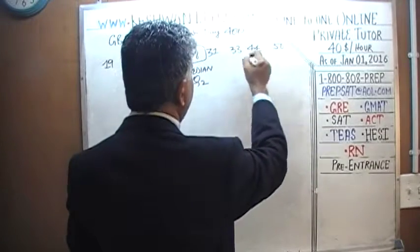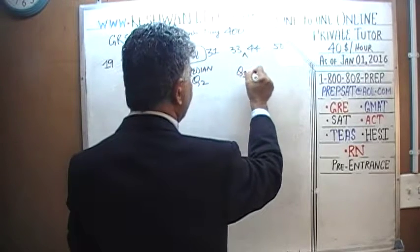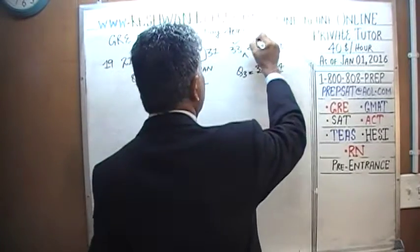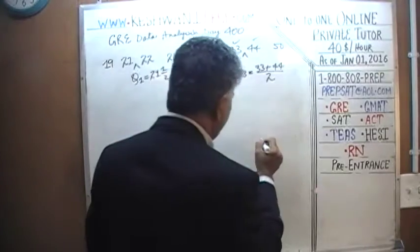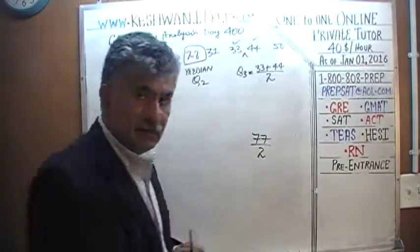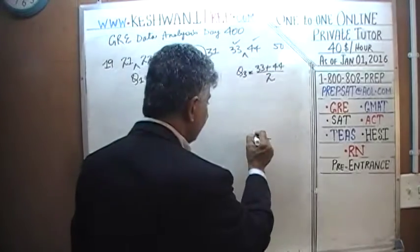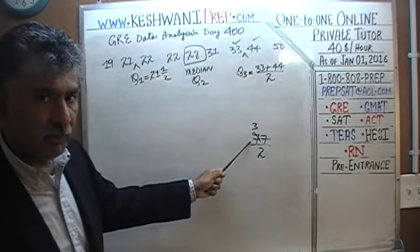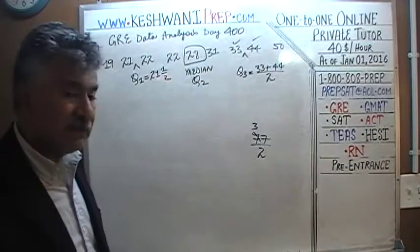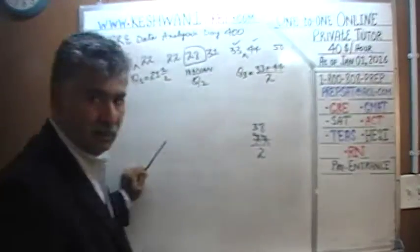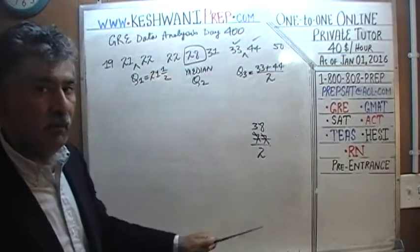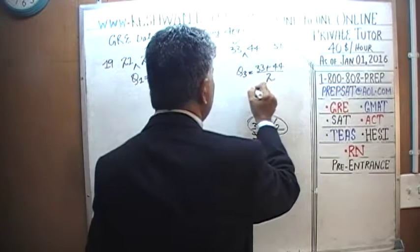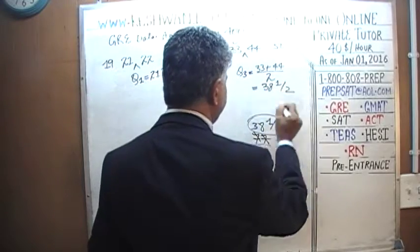Similarly, for the third quartile, we look at the upper four values — two on each side of the marker. The third quartile is the average of 33 and 44. 33 plus 44 is 77, divided by 2 gives 38.5.